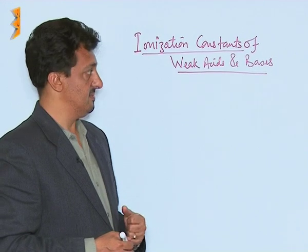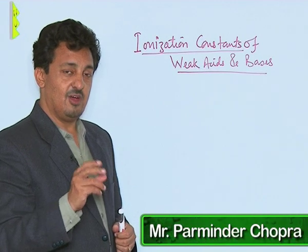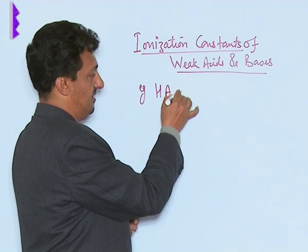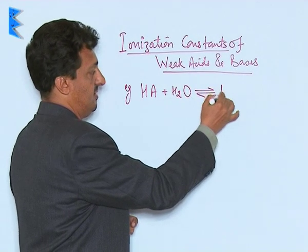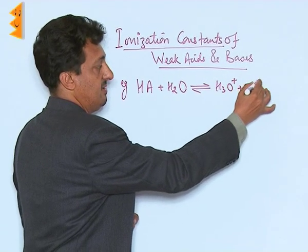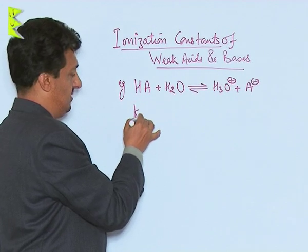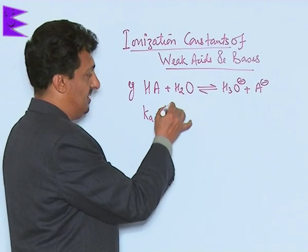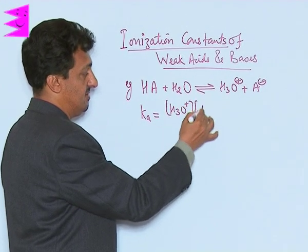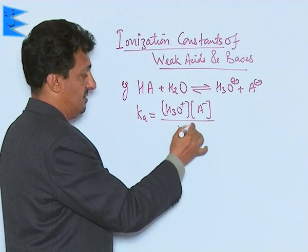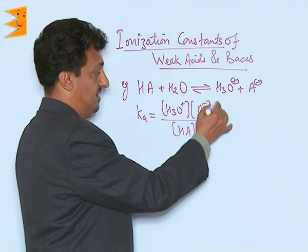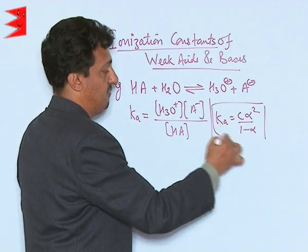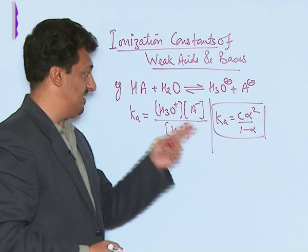Ionization constants of weak acids and weak bases. We have already covered how to derive ionization constants. For example, suppose we have an acid HA which when added to water gives hydronium ion and A minus. We can express its dissociation as Ka, the dissociation constant of the acid, equal to C·α² divided by (1 - α), where α is the degree of dissociation and C is the concentration of the acid taken.